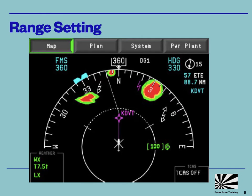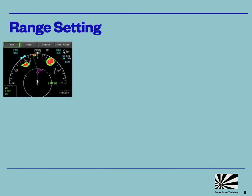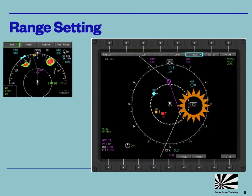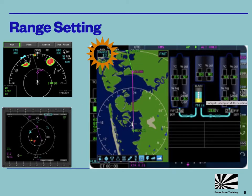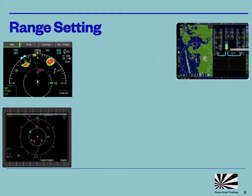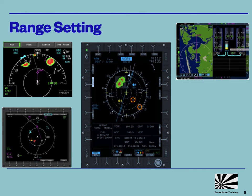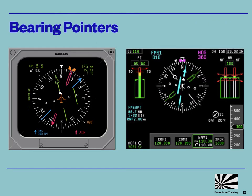One of the key aspects of making the picture in front of you easy to interpret is selecting an appropriate range. Try to avoid having a range so small that you only have a picture of a small bubble around the helicopter, but also avoid a range that is too large, because you'll end up with a lot of symbols crammed in on top of each other and you won't be able to read any of them. Finally, don't overlook the value of having a simple bearing pointer selected on your display — it gives you an easy indication to fall back on if you lose your smarter displays through technical failure or finger trouble.